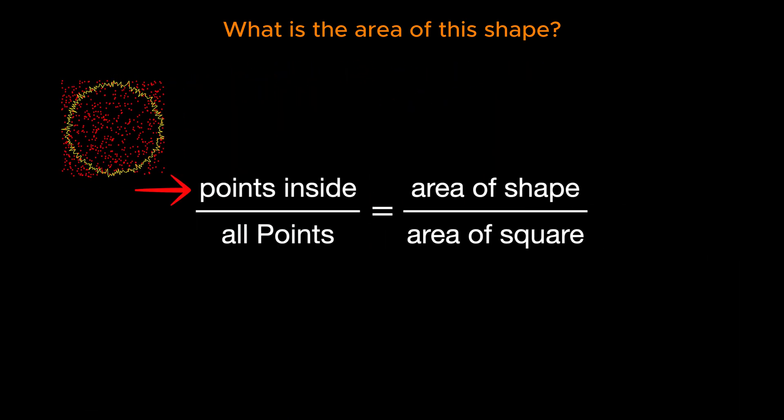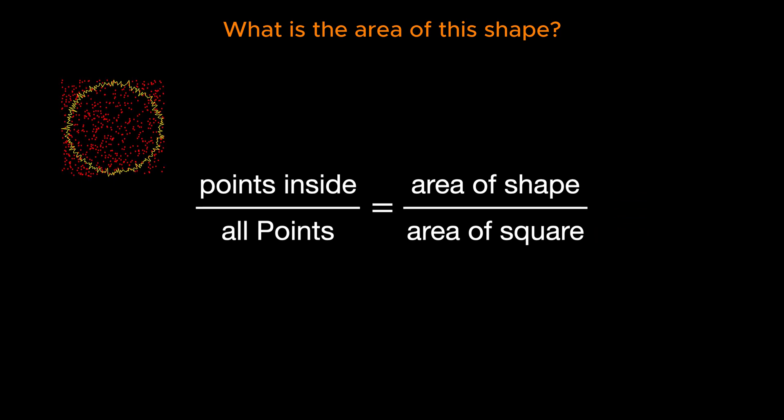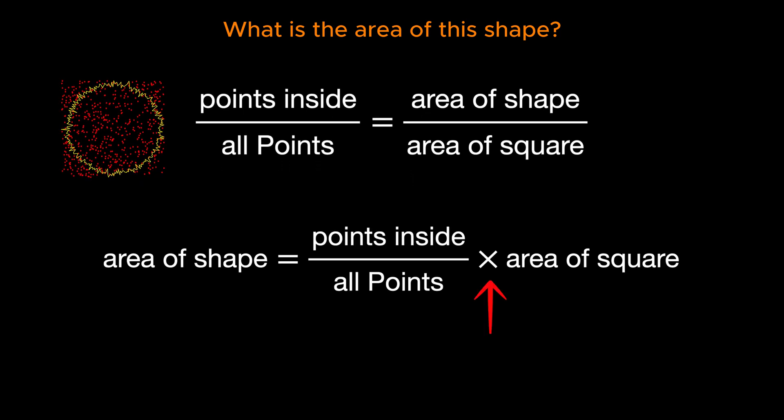The ratio of the number of points that fall inside the shape over the total number of points is equal to the ratio of the area of the shape over the area of the square, which we can easily compute. A simple multiplication of the two sides by the area of the square would give the area of the irregular shape that we were after.